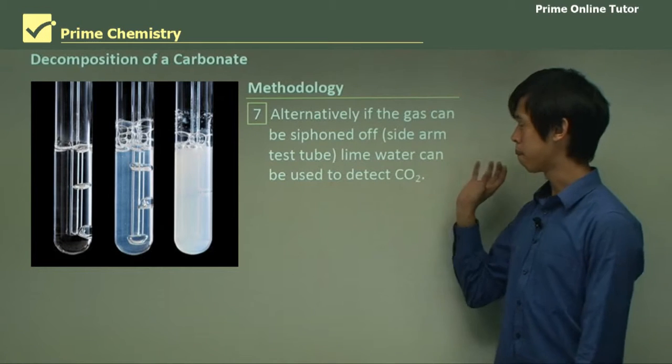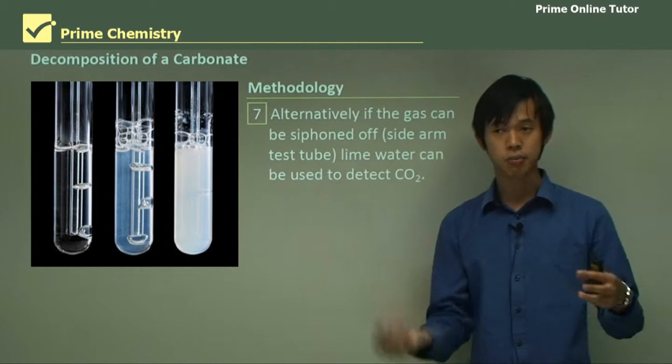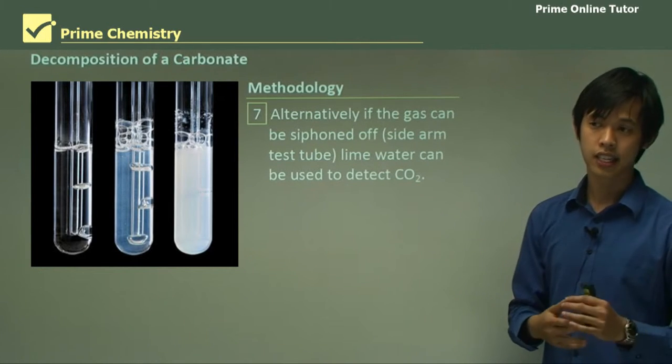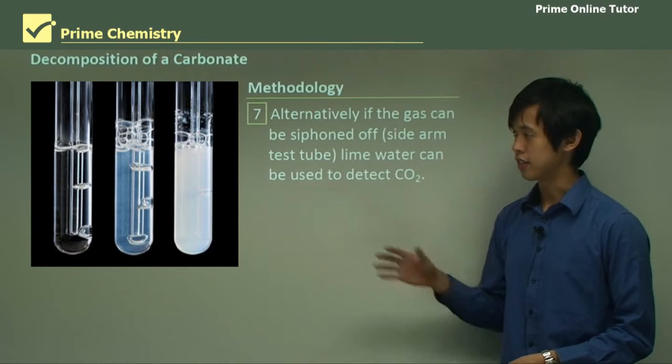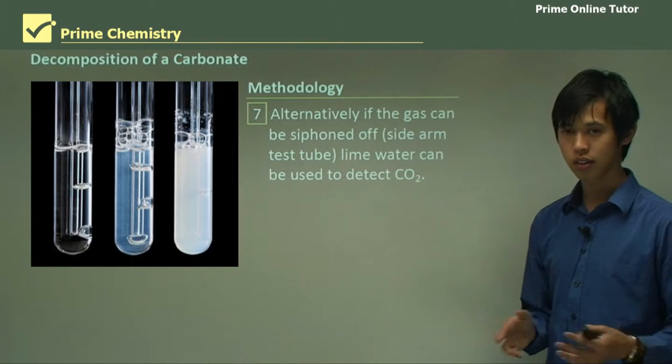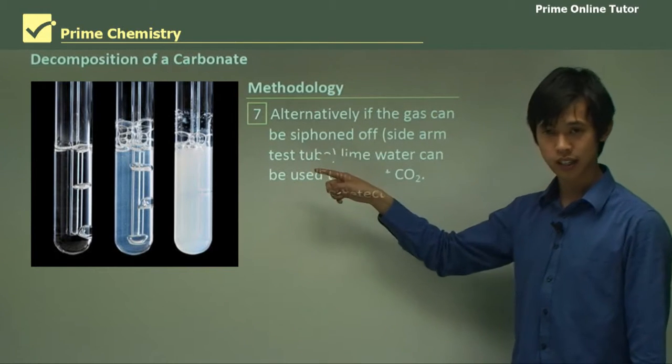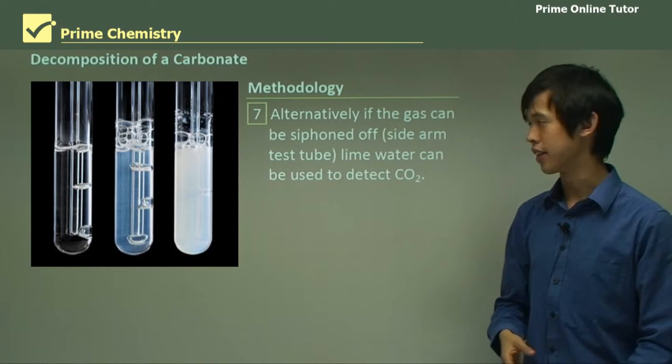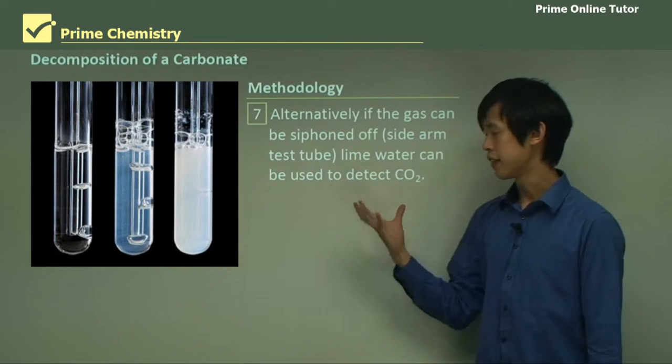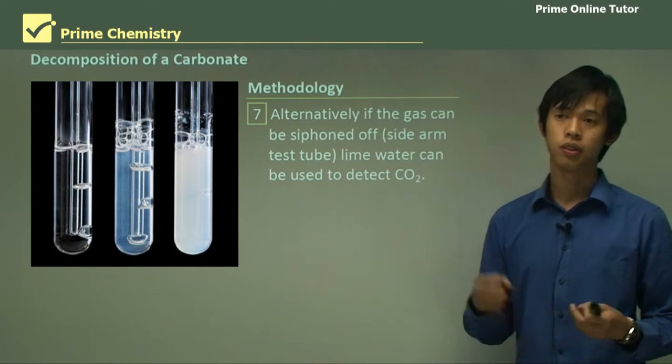Alternatively, if the gas can be siphoned off somehow. So if we can maybe grab a sample through a syringe, or use a sidearm test tube, we can pump that gas through lime water. And that will actually tell us straight away if the CO2 is present. So you see here, from left to right, you've got clear lime water, which is very nice. It's almost like clear water. Now as you continue to pump CO2 in, it gets cloudier in the middle. And there's a little bit of carbon dioxide in there. And then as you continue to pump carbon dioxide, it gets whiter and whiter. So if the lime water goes from clear to milky white, then you know you've got carbon dioxide available, or carbon dioxide in that gas.